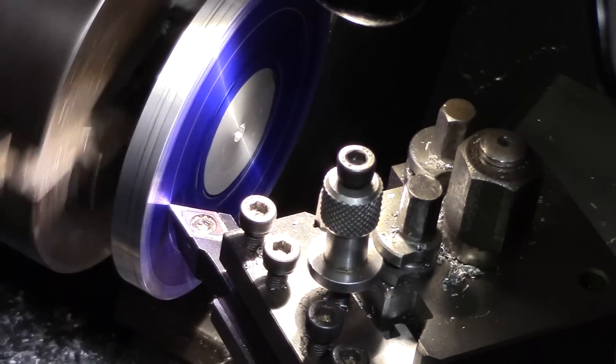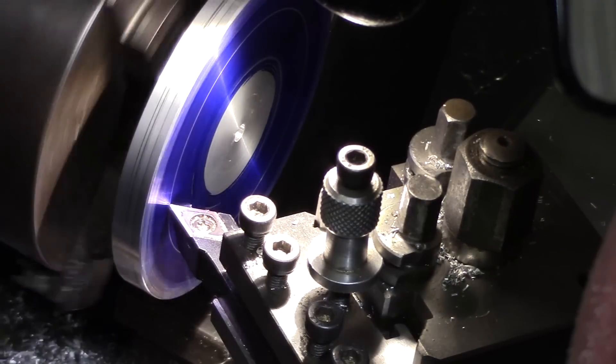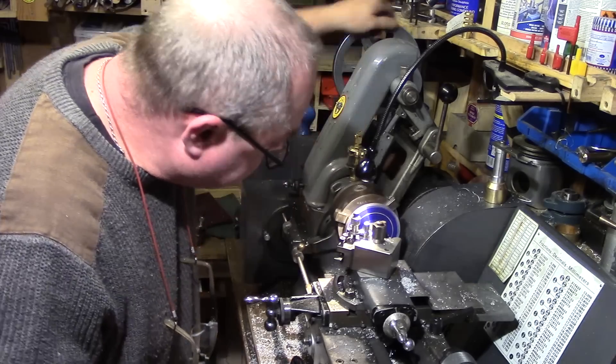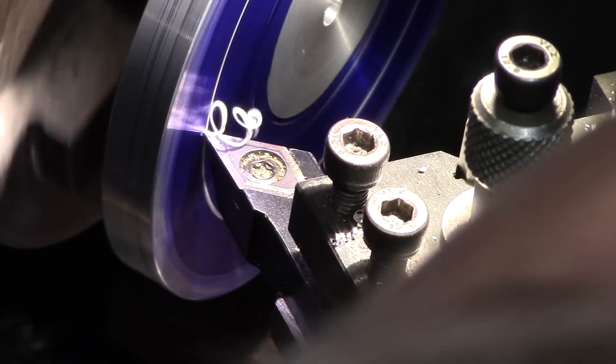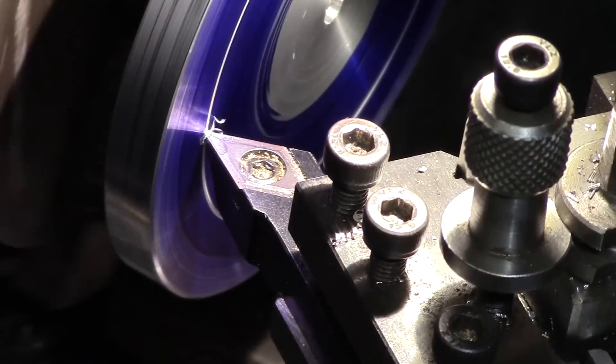Once aligned, I simply rotate the lathe spindle by hand while gently applying some cut by advancing the saddle to a depth of approximately 15 thou, or until an even groove has been cut.